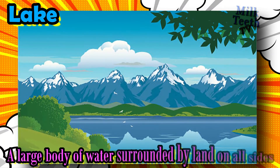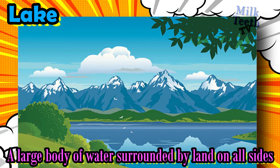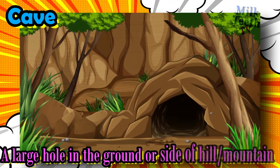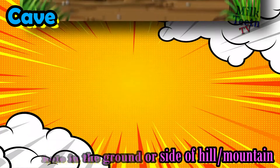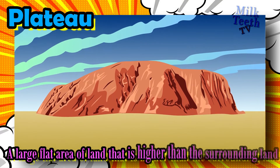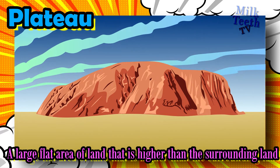Lake: a large body of water surrounded by land on all sides. Cave: a large hole in the ground or side of a hill or mountain. Plateau: a large flat area of land that is higher than the surrounding land — it is basically a raised flat lowland.